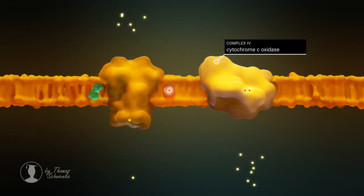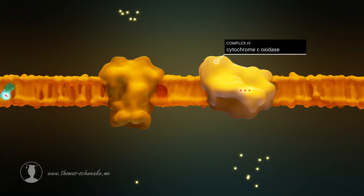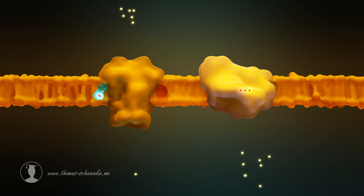Cytochrome C transfers the electron to the fourth complex. Finally, Complex 4 reduces oxygen to water, with the help of the four electrons, an oxygen molecule, and four protons from the matrix.